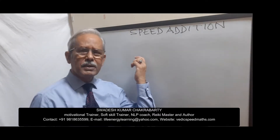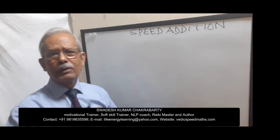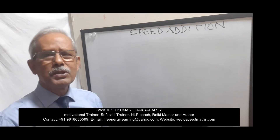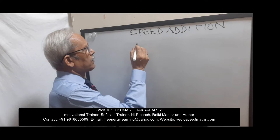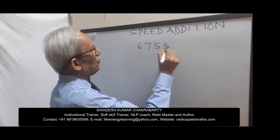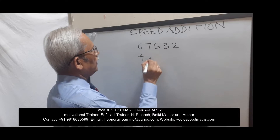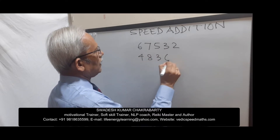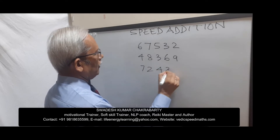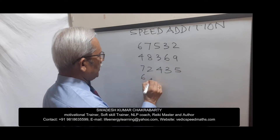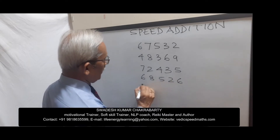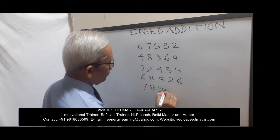So let me now write some numbers at random and I will make a totalling of those numbers and you will see the speed of that addition. For example: 6753248369, 724356852678925.